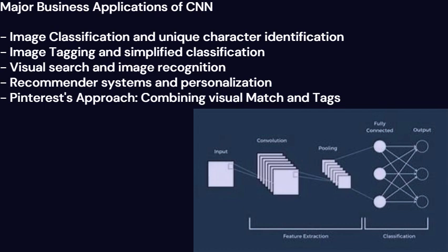Image Classification and Unique Characteristic Identification. At the core of CNNs lies their ability to perform image classification, a process that involves categorizing an image into predefined classes or labels. Through convolutional layers, the network learns to detect low-level features like edges.